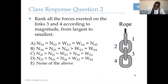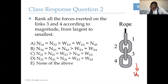How about link four? Link four has mass, so there will be a weight force W_E4 pointing down. Then, since link four pushes down on link three, link three pushes back up on link four with normal force N_34 pointing up. Applying Newton's second law to link four: N_34 − W_E4 = 0, so N_34 = W_E4.